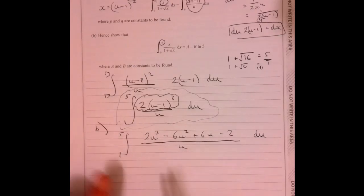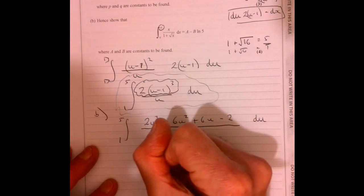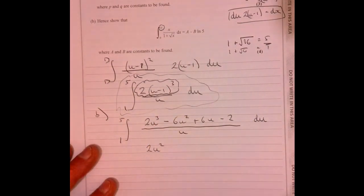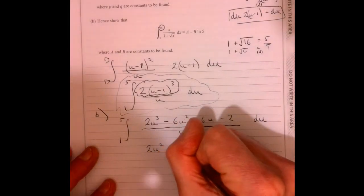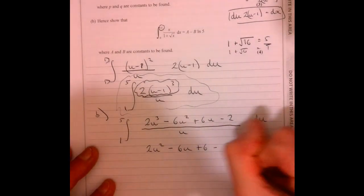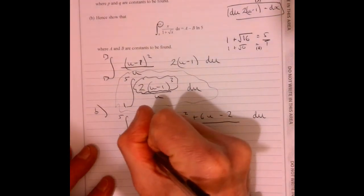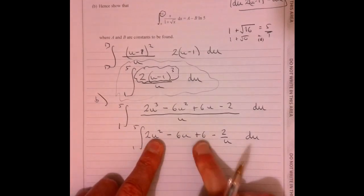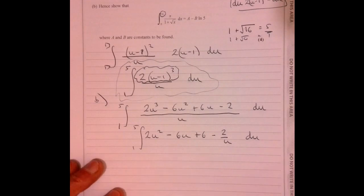OK, so I'm going to get it into a form that I can actually integrate. So if I just divide this up, what's that going to give me? That's going to give me 2u squared. All right. What I'm doing is I'm just dividing through by this u here minus 6u plus 6 minus 2 over u. So that's what we're going to integrate. Now, that's in a form I can do. If I had any one of these bits here, I should be able to integrate it. Well, now let's integrate it. Let's see where we get to.